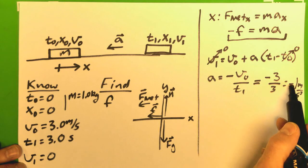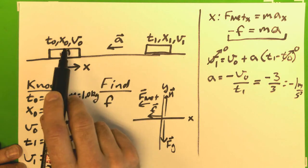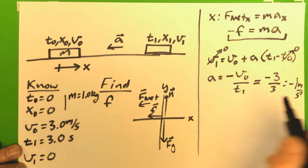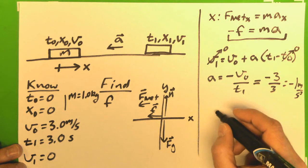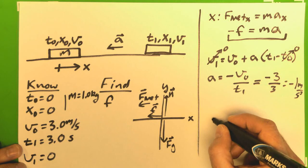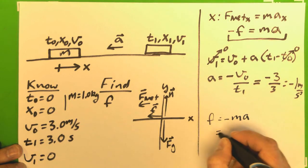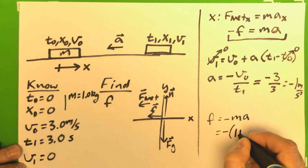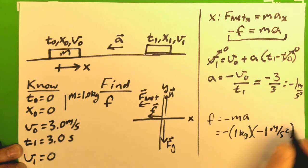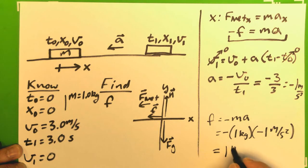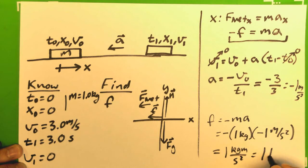Now, I should get a minus sign, because I've chosen to the right being positive, and this acceleration I have determined is to the left, making it negative. So, now taking that and plugging in here, I have enough to solve for the magnitude of f, and so now I can say that f is equal to negative ma, which is equal to negative 1 kilogram times negative 1 meter per second squared, and I get 1 kilogram meters per second squared, which is 1 newton.